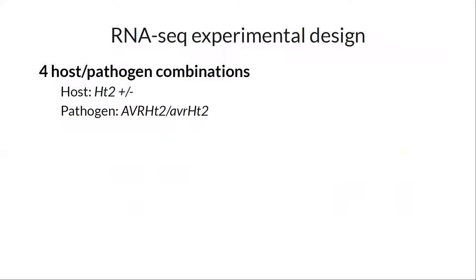Moving on to what I've been working on. The micro scale is mostly about this RNA-seq experiment. The experimental design has two parts because we're interested in looking at multiple things. The first part is the host and pathogen combinations: we are inoculating one of two maize hosts which does or does not have the maize R gene HT2, with one of two pathogen isolates. The critical difference is that they either have the wild type avirulence gene or the non-wild type avirulence gene.